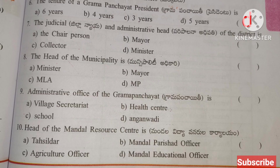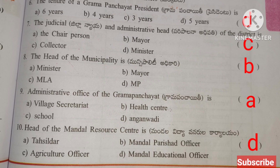The judicial and administrative head of the district — answer is C: Collector. The head of the Municipality — answer is B: Mayor. Administrative office of the Gram Panchayat — answer is A: Village Secretariat. Head of the Mandal Resource Center — answer is D: Mandal Educational Officer (MEO).